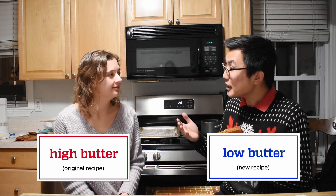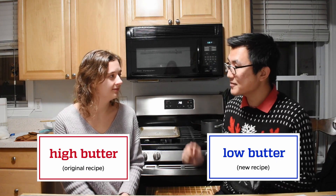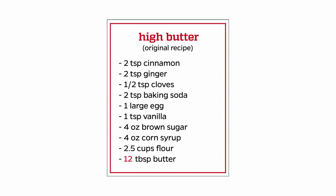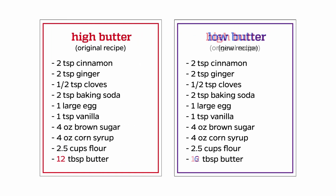Hmm, that makes sense. Let's test this out by actually making some cookies. How about we make one batch with my original recipe and we can make a second batch with less butter and see how that affects things. Sounds great, and to be fair we won't change anything else about the recipe to limit the number of variables. Okay, let's get started. Let's go!